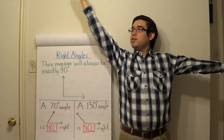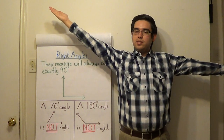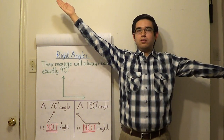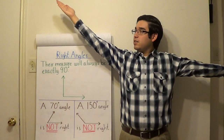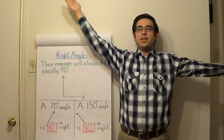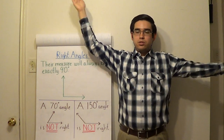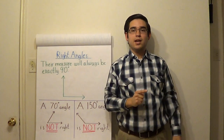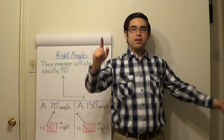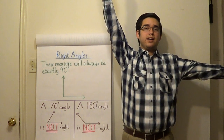And if your arm was slanted towards the right, that also wouldn't be a right angle because now you have an angle with a measure that's greater than 90 degrees. In order to have a right angle, your angle needs to be exactly 90 degrees.